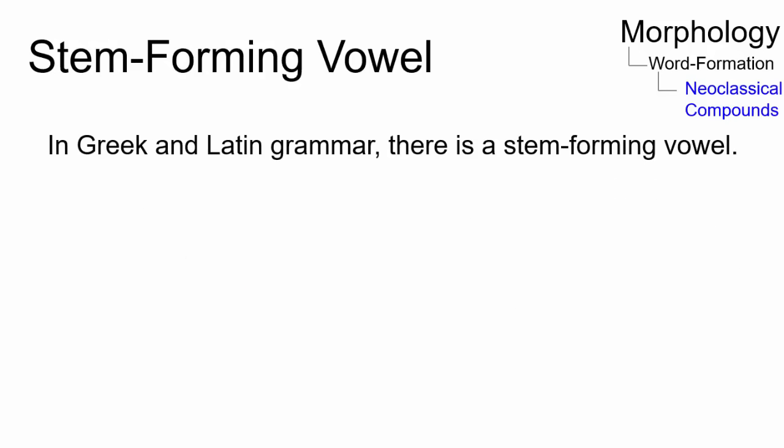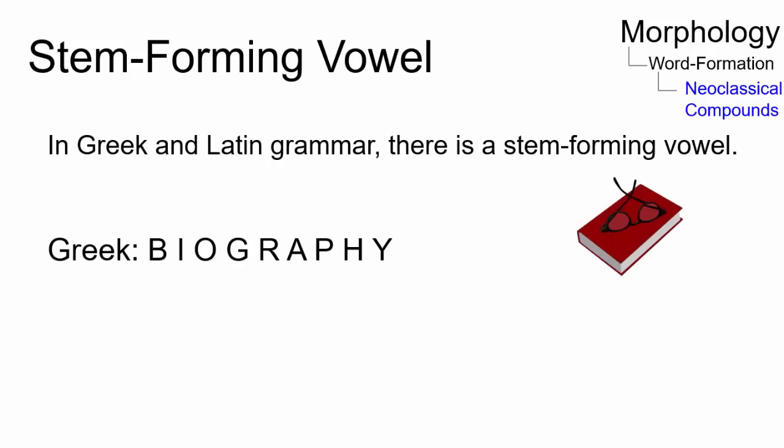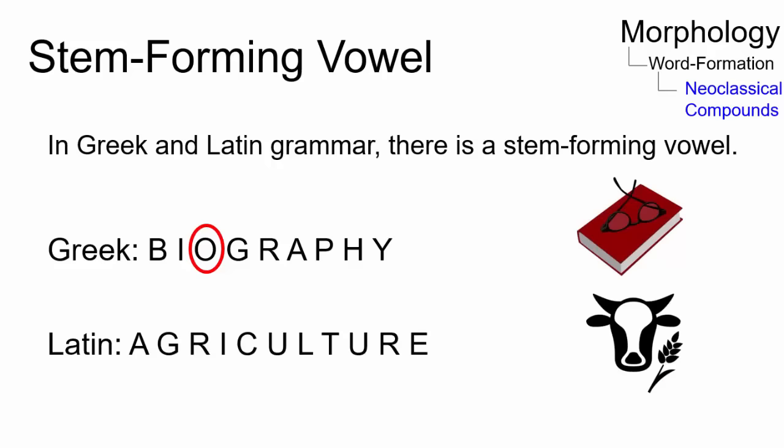In Greek and Latin grammar, combining bases usually require a thematic or stem-forming vowel. In biography, from Greek, the thematic is o. In agriculture, from Latin, it is e.